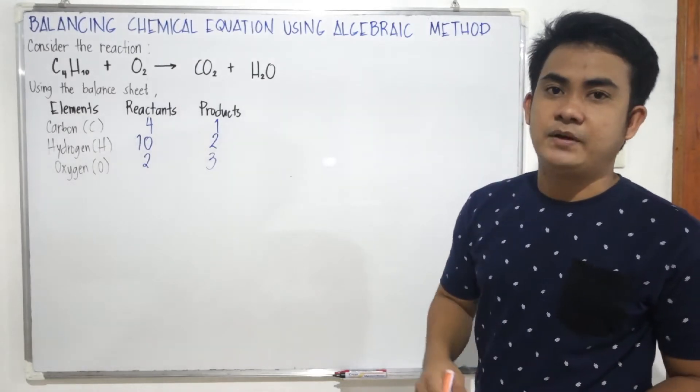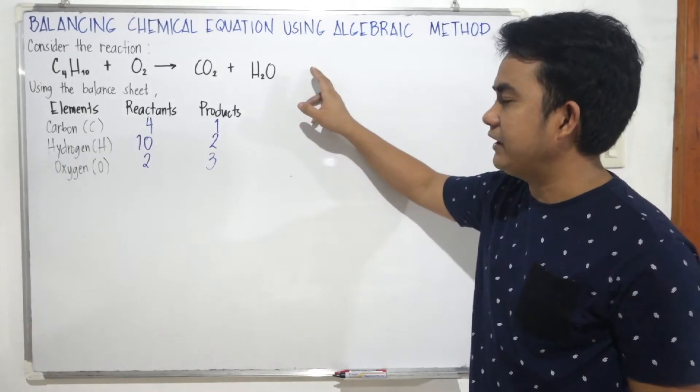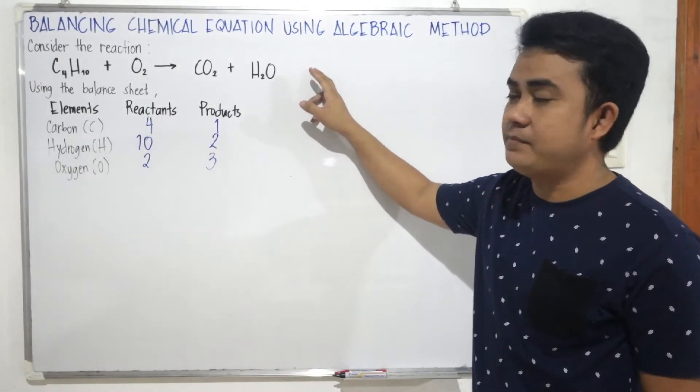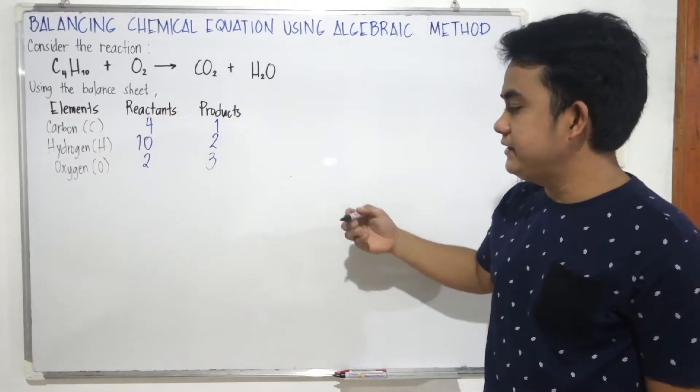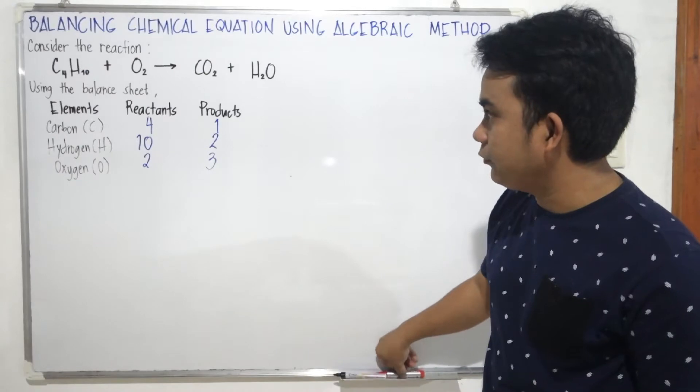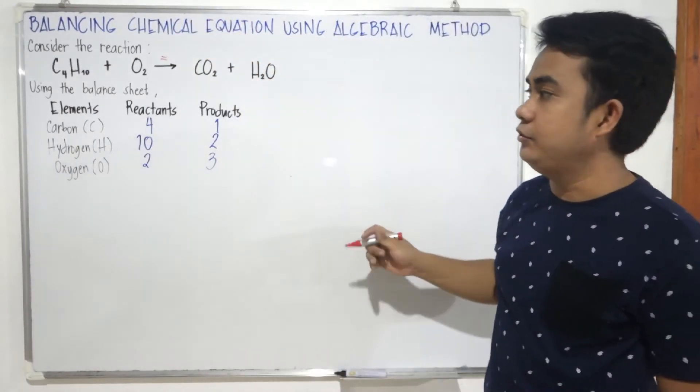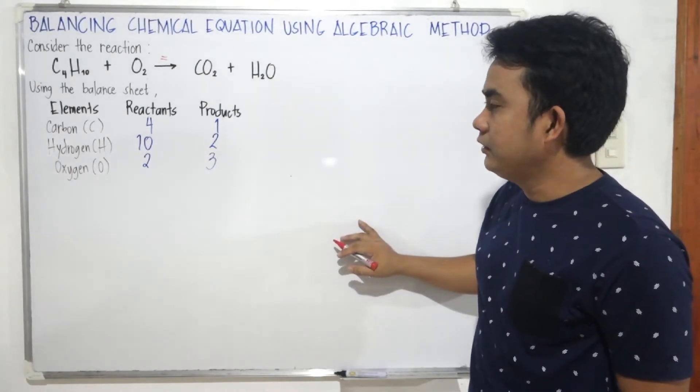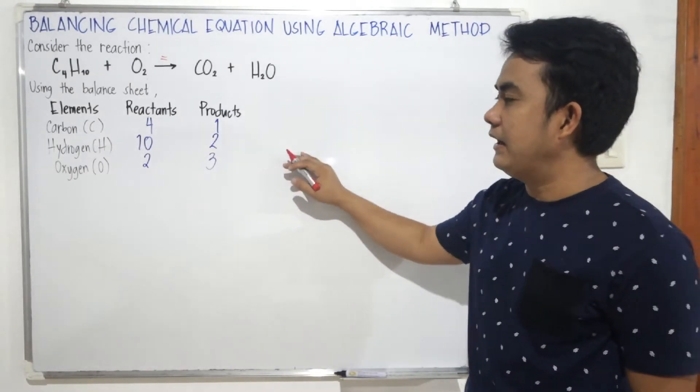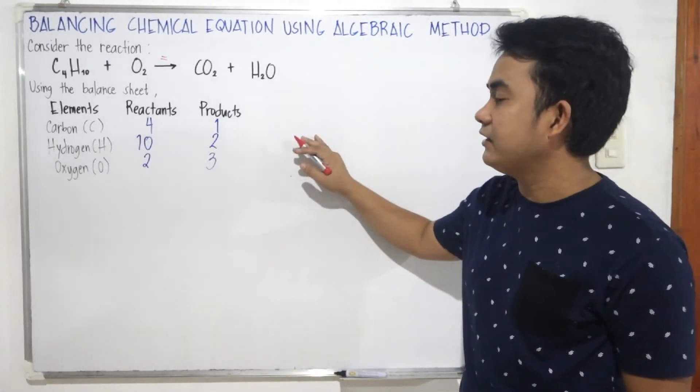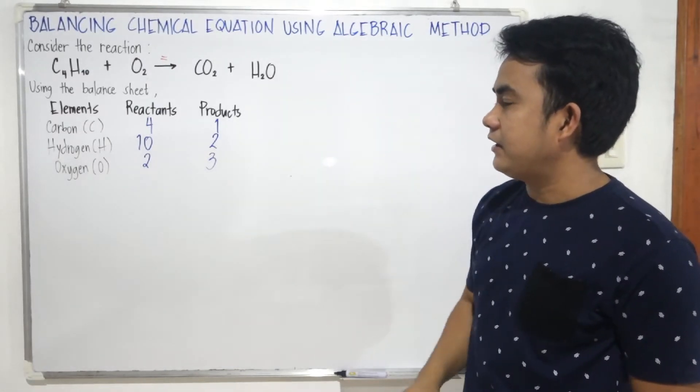So, what's the first step in balancing using algebraic method? As you can see, the chemical equation is just an algebraic equation wherein the arrow sign or the yield sign is just also equivalent to an equal sign. So our first step is we will add variables as coefficients for each molecular species in the chemical reaction.